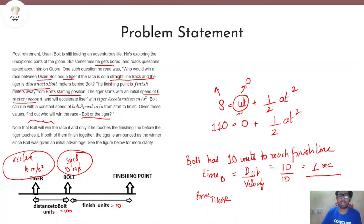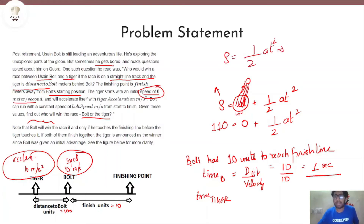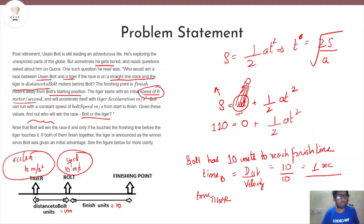To find the Tiger's time, we use the kinematic formula: s = ut + ½at². Since the Tiger's initial speed u is zero, the term ut becomes zero and cancels out. So we have s = ½at². Rearranging gives t² = 2s/a, or t = √(2s/a). The distance s for the Tiger is distance_to_Bolt plus finish_units, because the Tiger must cover both the gap behind Bolt and the distance to the finish line.